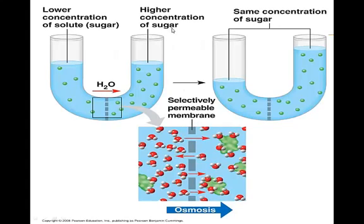Here we've taken a glass tube, filled it with water, and added sugar to the water. In between the two glass tubes, we've placed a semi-permeable or selectively permeable membrane. Only water is going to be allowed to go from one side to the other — so water has the freedom to move from the left side to the right side or from the right side to the left side.